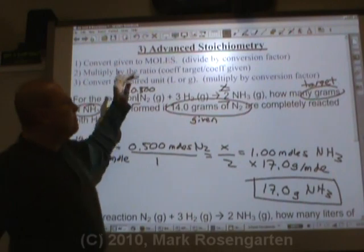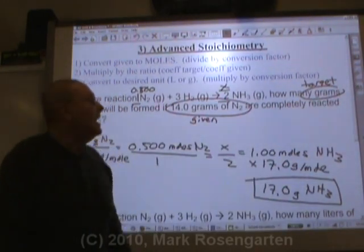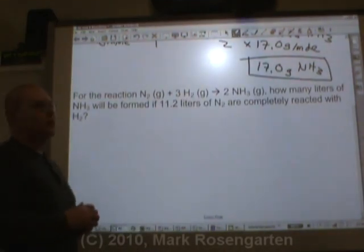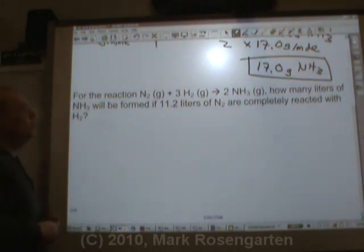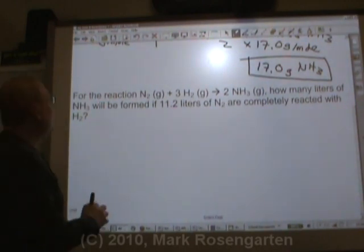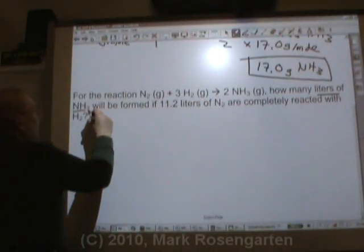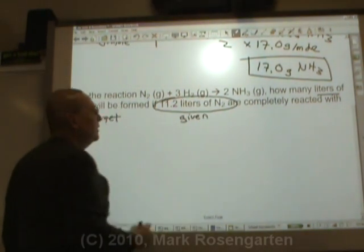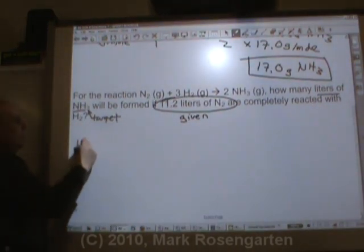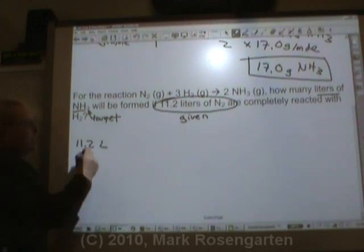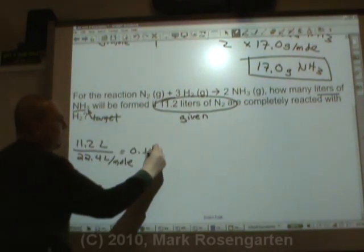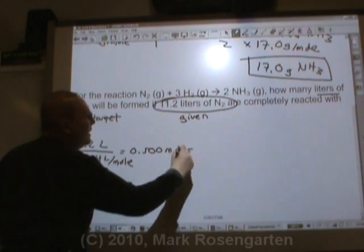Knowing how much reactant you have, you can predict how much product you're going to get in a unit that's easily purchasable. For the reaction N2 + 3H2 → 2NH3: how many liters of NH3 will be formed if 11.2 liters of N2 are completely reacted with H2? Liters of NH3 is our target, and 11.2 liters of N2 is given. Our first step is to convert 11.2 liters to moles by dividing by 22.4 liters per mole, giving us 0.500 moles of N2.